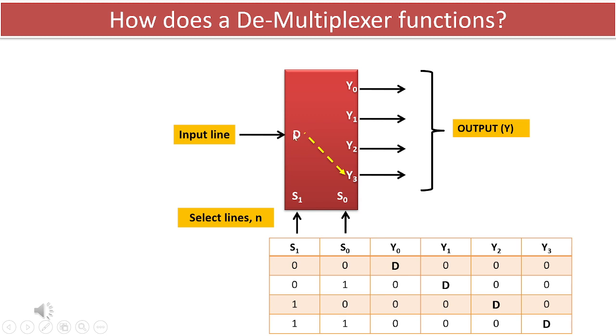When the select lines are configured as s1 equals 1 and s0 equals 1, the data D from the input is routed to the output y3, as illustrated in the diagram. Again, the data at this output can be either in a high or low state.